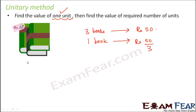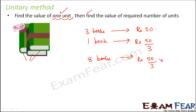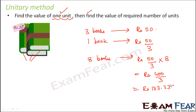Because rupees 50 is for three books, if you divide rupees 50 into three equal parts, each part would be the cost of one book. Then we find the value for the required number of units. In this case, we had to find the cost of eight books. So eight books would be rupees 50 divided by three, multiplied by eight — that is rupees 400 by three, which equals rupees 133.33. That is the cost of eight books.